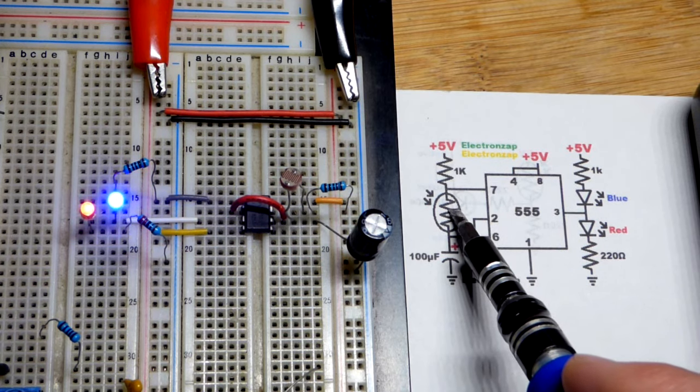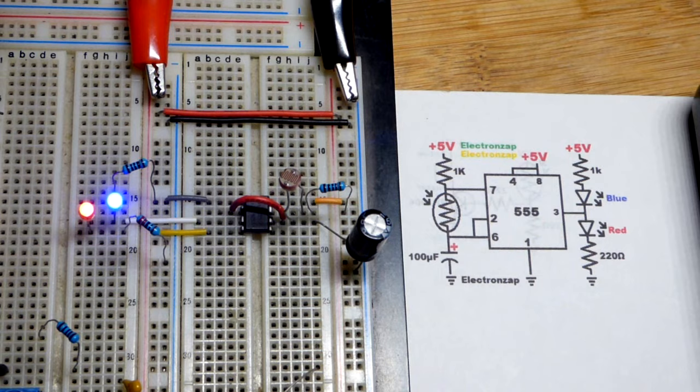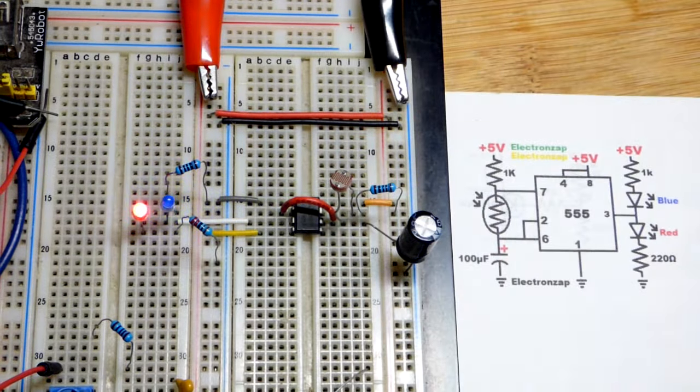So again, the light-dependent resistor conducts better as more light falls on it. I believe I designed this circuit probably for when I turn the lamp off. It looks like we have kind of an okay amount of flashing right there. And the lamp is at its brightest setting now.